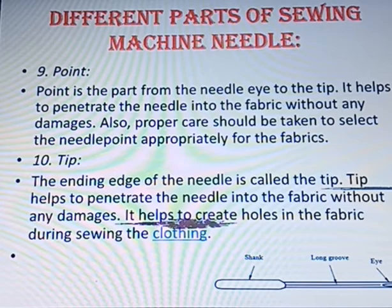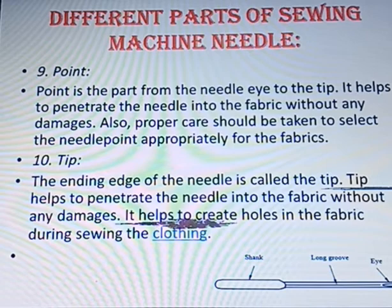Second last, we have the point. The point is the part from the needle eye to the tip. It helps to penetrate the needle into the fabric without causing damage, as it will not fray the fabric. Then we have the tip — the ending edge of the needle. The tip helps to penetrate the needle into the fabric without any damage and helps to create holes in the fabric during the sewing of the garment.